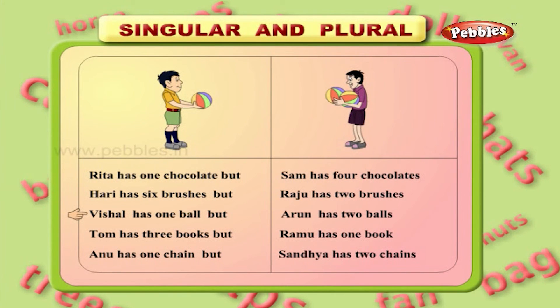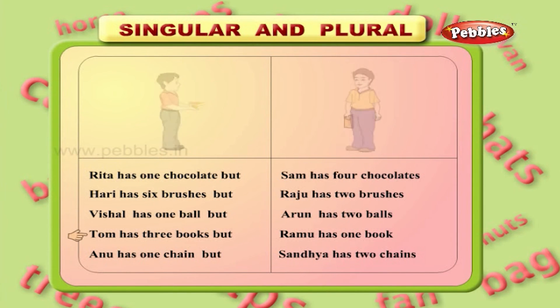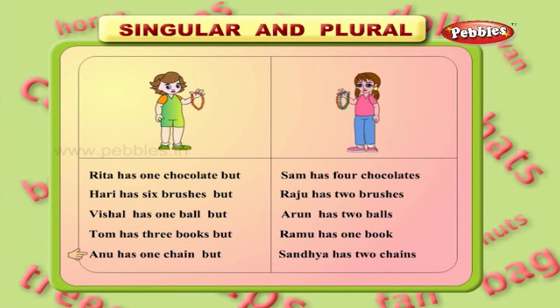Vishal has one ball, but Arun has two balls. Tom has three books, but Ramu has one book.